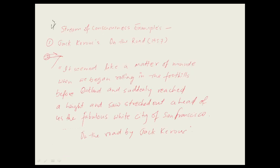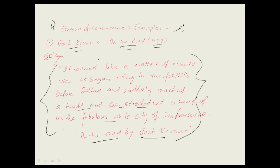For a stream of consciousness example, here is Jack Kerouac's 'On the Road,' published in 1957. The passage reads: 'It seemed like a matter of minutes when we began rolling in the foothills before Oakland, and suddenly reached a height and saw stretched out ahead of us the fabulous wild city of San Francisco.'